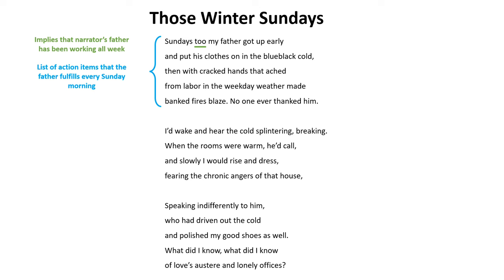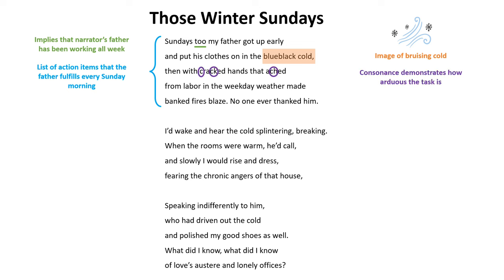When creating a picture of these Sunday mornings, the narrator describes the 'blue-black cold,' and those two colors — blue and black — might remind you of a bruise. This description illustrates how harsh and unyielding the conditions are on these winter mornings. That image continues with the next line, which depicts the father's cracked hands that ached. One literary device here is consonance, since the hard C consonant in 'cracked' and 'ached' is repeated. This consonance could mimic the crackling of a fire, and overall it draws the reader's attention to show how arduous this task is.